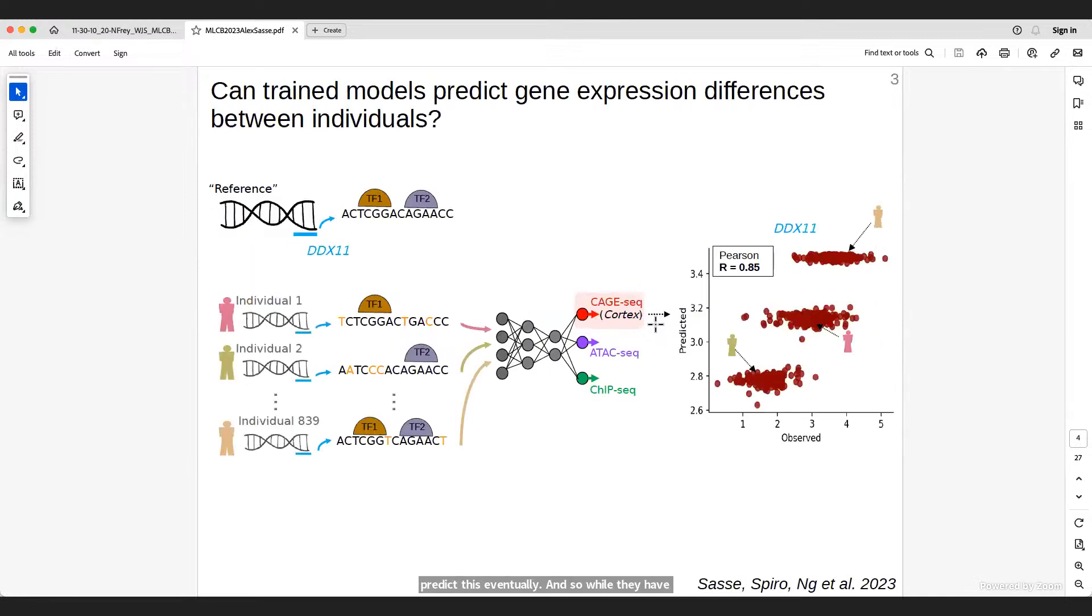And so, while they have performed pretty well on a whole bunch of variant effect prediction benchmarks, earlier this year, we set out to basically test them and see how well are they performing on predicting differences between expression of different individuals. And so, what we used was the Enformer model. So, at that point, the most elaborate, largest model that was out there. And we used whole genome sequencing data of 839 people that was paired with RNA-seq data. And so, we sent these sequences that were 200,000 base pairs long, which had about 100 to 1,000, a couple thousand variations to the reference through the model, and then compared the predictions of the model with the observed data. And so, here on the right, you see this for one gene, DDX11. You see the measured values on the x-axis and the predicted values on the y-axis, and you can see that the model is kind of able to identify clusters of people with high, medium, and low expression.